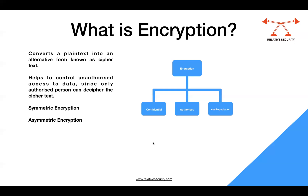Who can convert that data back to plain text? Anybody who has access to the secret key through which that data was encrypted in the first place. When talking about encryption, you are ensuring that the confidentiality of that data is not compromised. Nobody without the key can read the data — only authorized persons who have the key will be able to decrypt and access it.